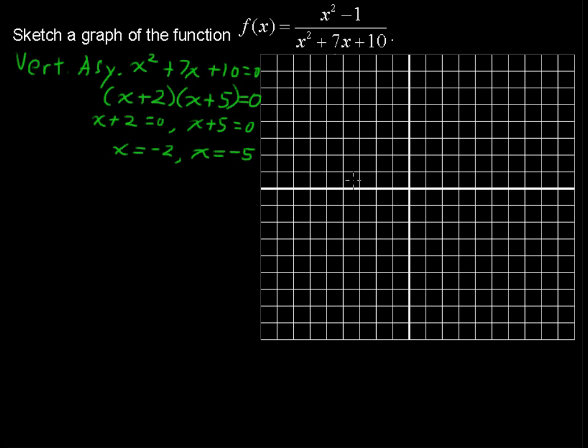So our vertical asymptotes, lines that the graph cannot cross, are right at x equals negative 2 and at x equals negative 5.